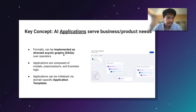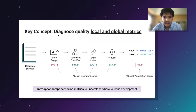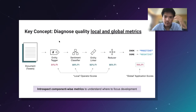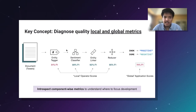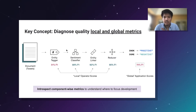The last key concept: once you have operators composed into a more complex end-to-end application, it's critical to be able to diagnose quality at the local and global level. You want to understand how each operator is doing independently, but also how the application as a whole is doing — whether you're actually solving the downstream business problem. Having this component-wise view plus a global view makes it really easy to focus development efforts on the parts that are underperforming rather than those doing well.